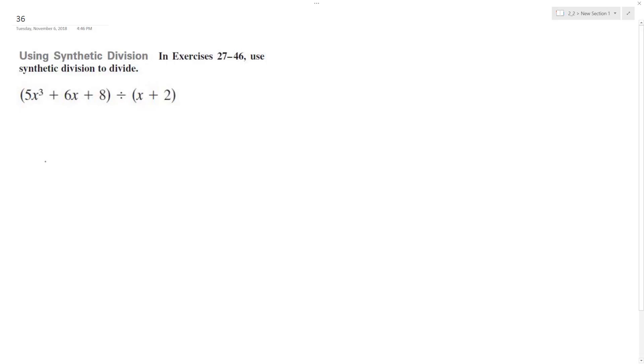Using synthetic division, let's solve the following problem. Negative 2, and then we're going to have 5. You've got to be careful here. We've got to put a placeholder for what would be x squared, which will be 0, and then 6, and then 8.